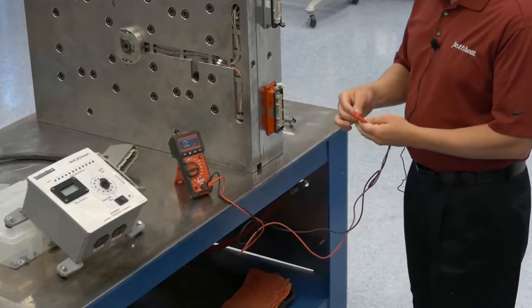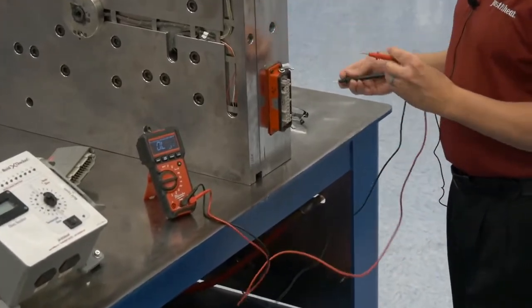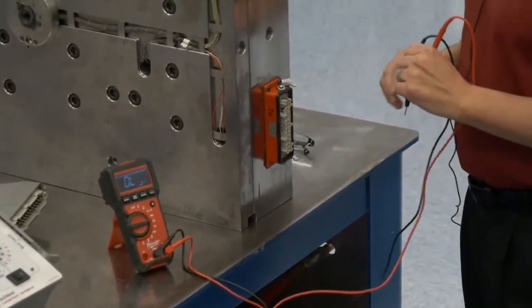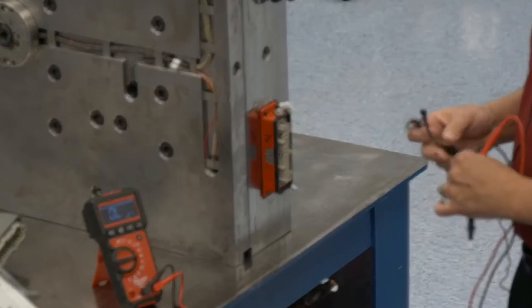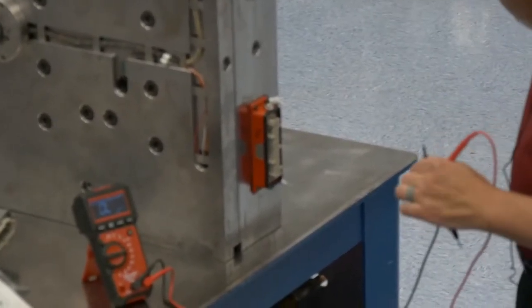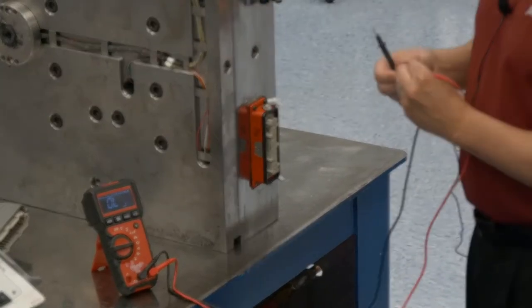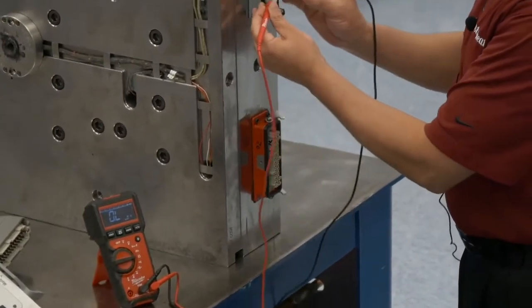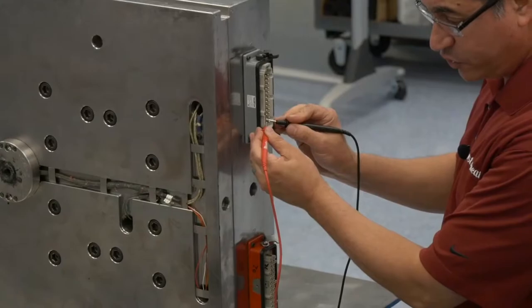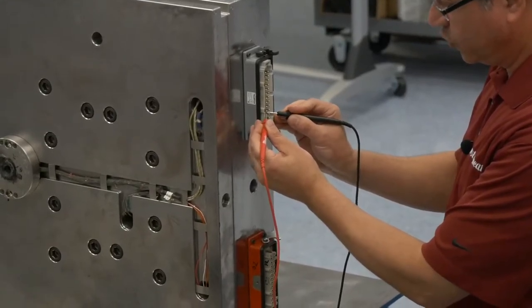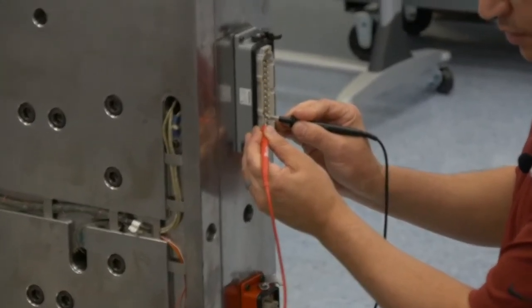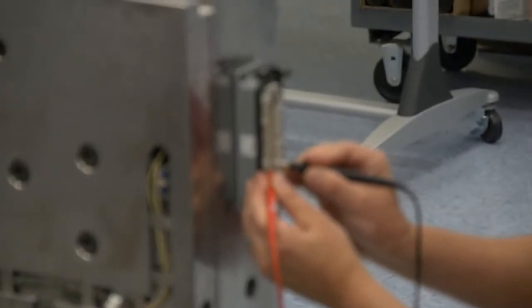Then I would go to each one of the heaters one by one, and again, I have to know the wiring diagram, and I have to be able to see the pins. So I'm going to put on my glasses. I already know the wiring diagram for this particular tool. So I know that 1 and 13 is going to be my first zone, 2 and 14, and then so on and so forth. I'm going to go through every one of them.